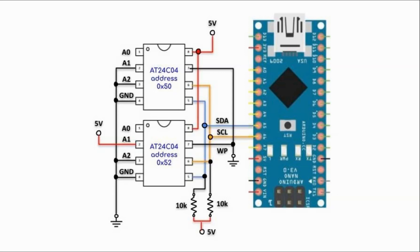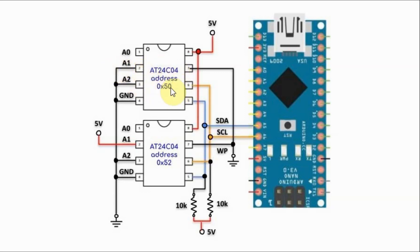This is a circuit diagram showing the interfacing of 2 of these EEPROMs with the Arduino. Keep in mind we can interface up to 4 by just changing the hardwiring of pins A1 and A2. Based on the hardwiring of the first EEPROM, the device address is hexadecimal 50, and based on the hardwiring for the second EEPROM, the device address is hexadecimal 52.